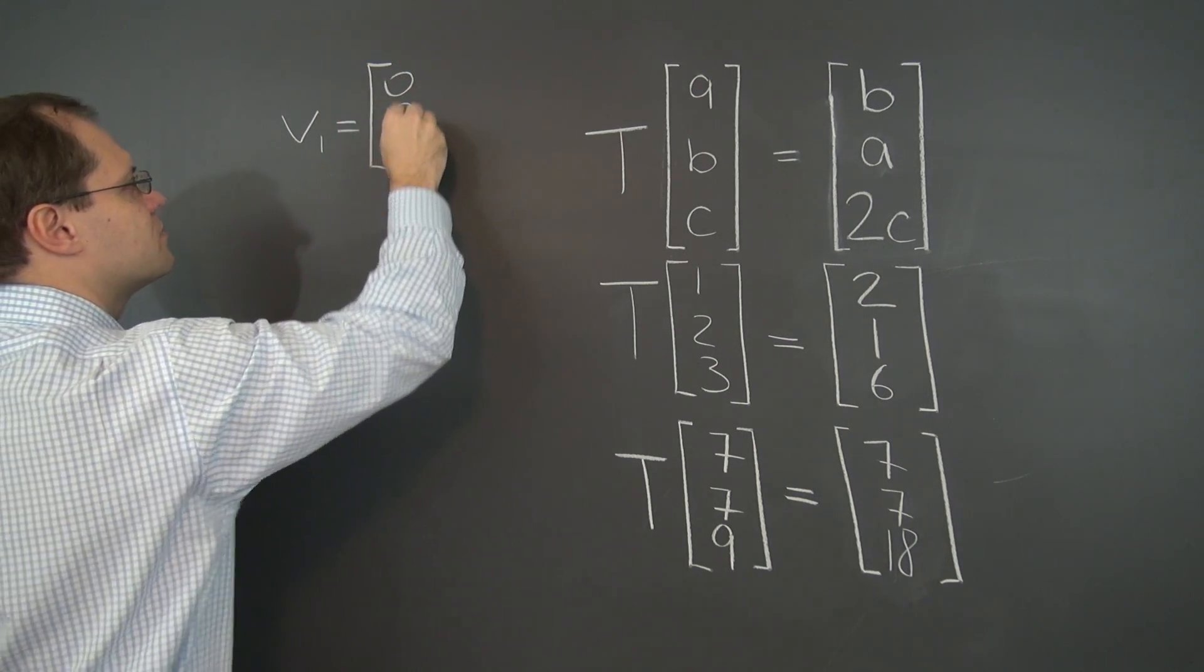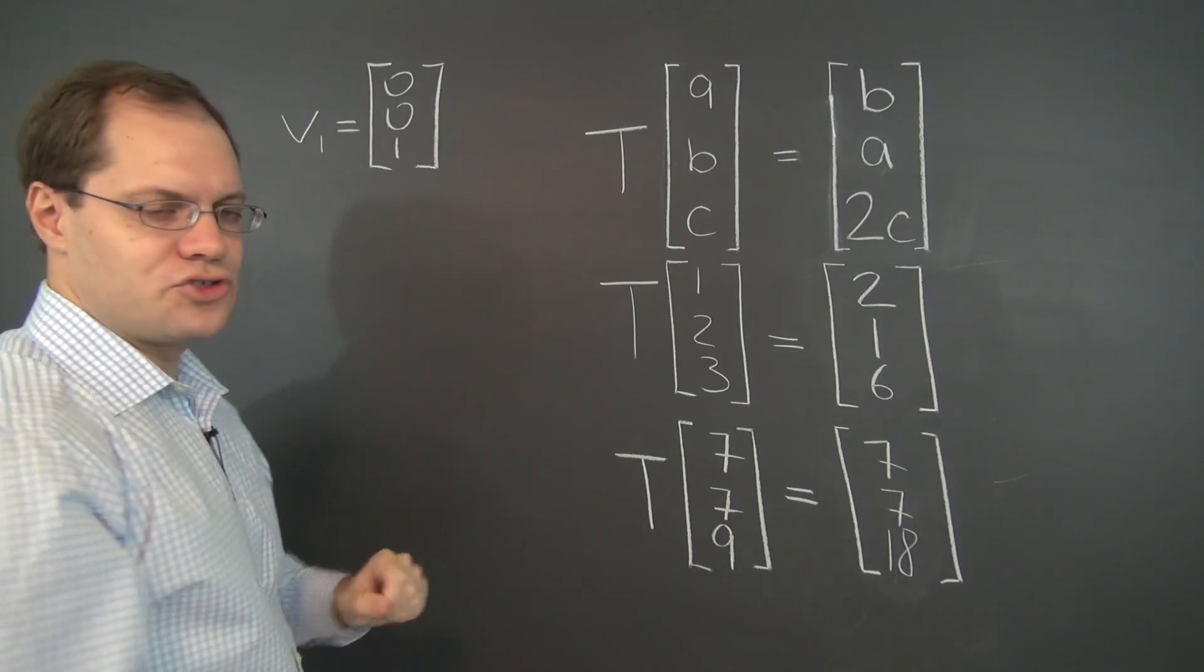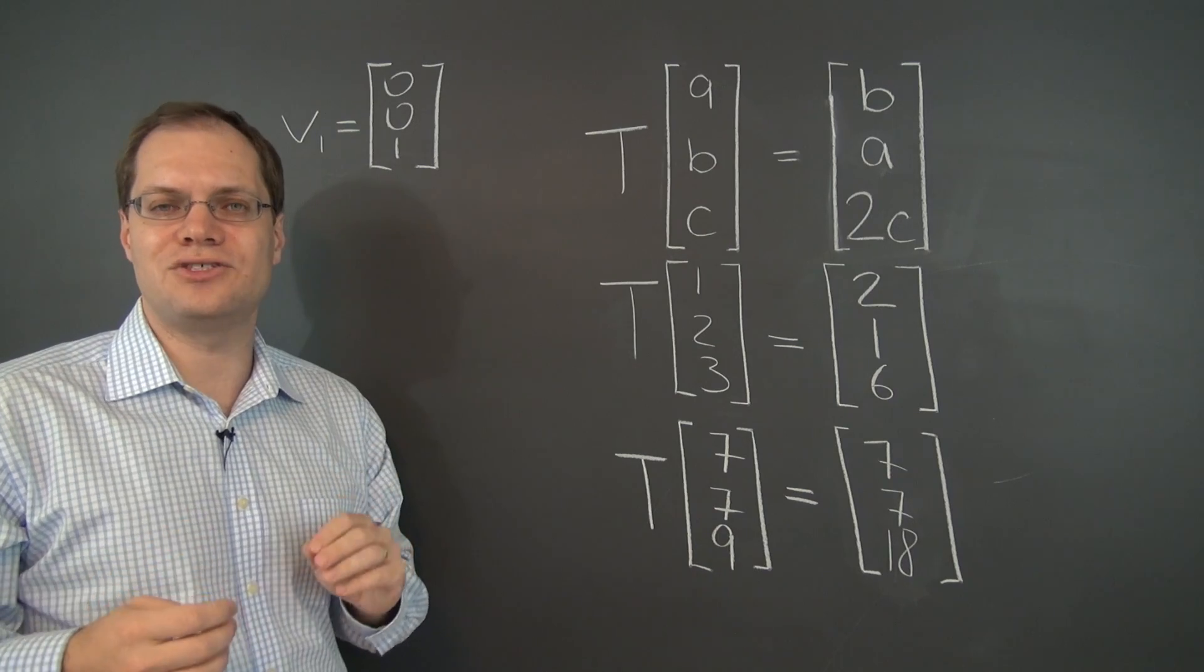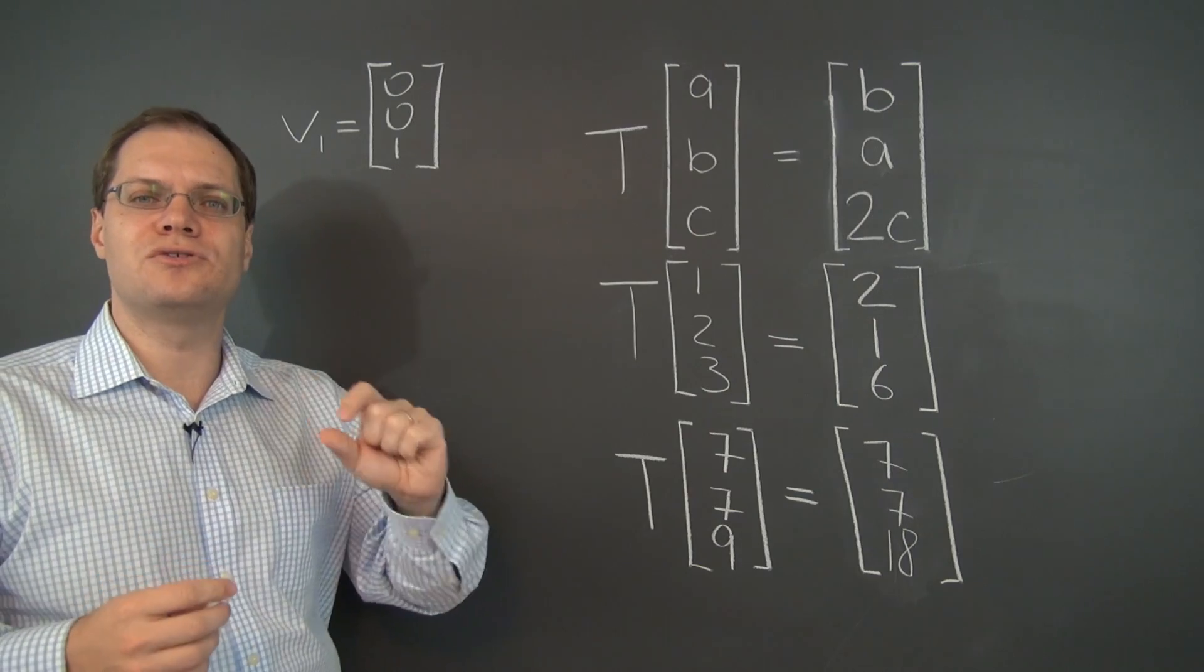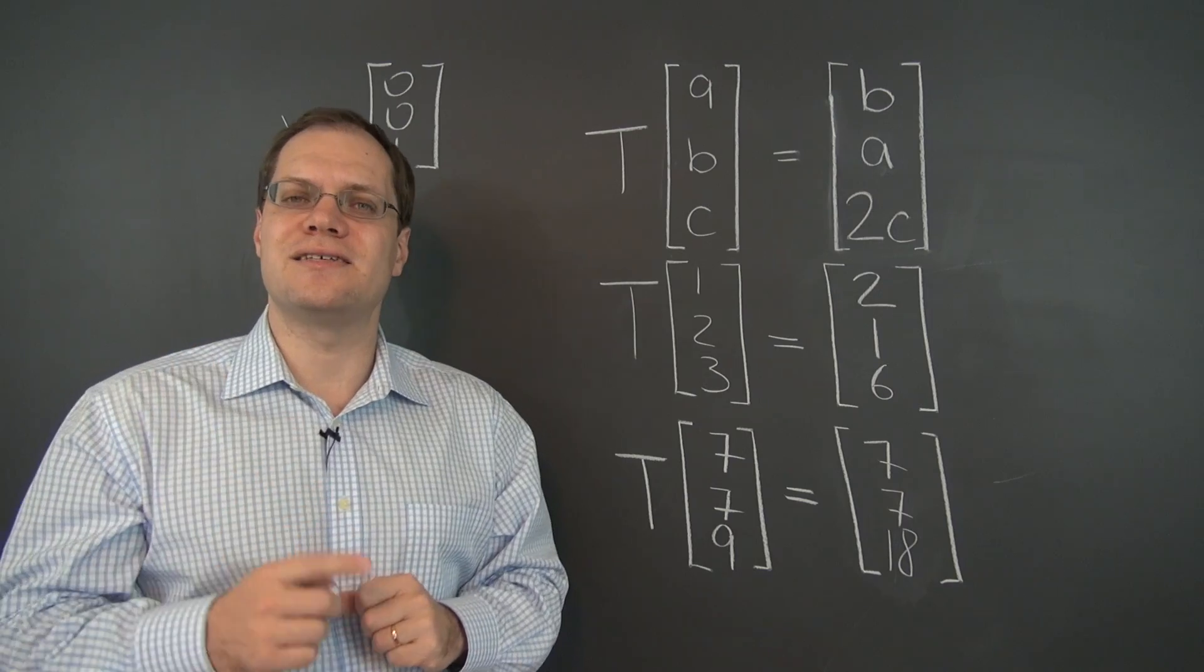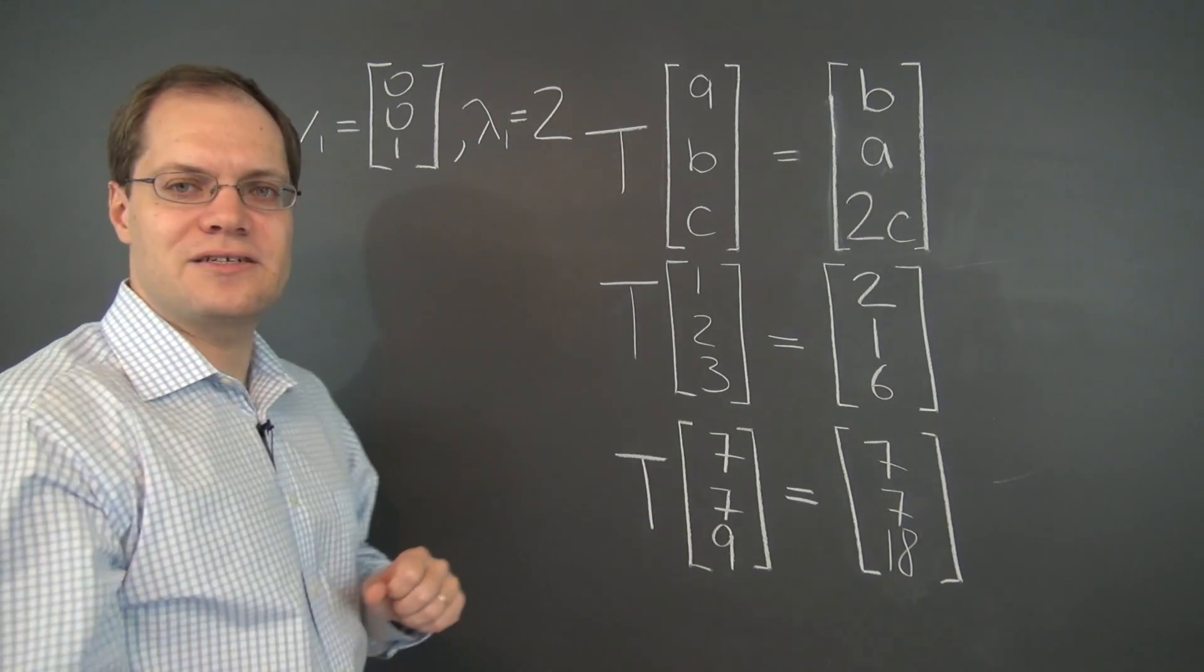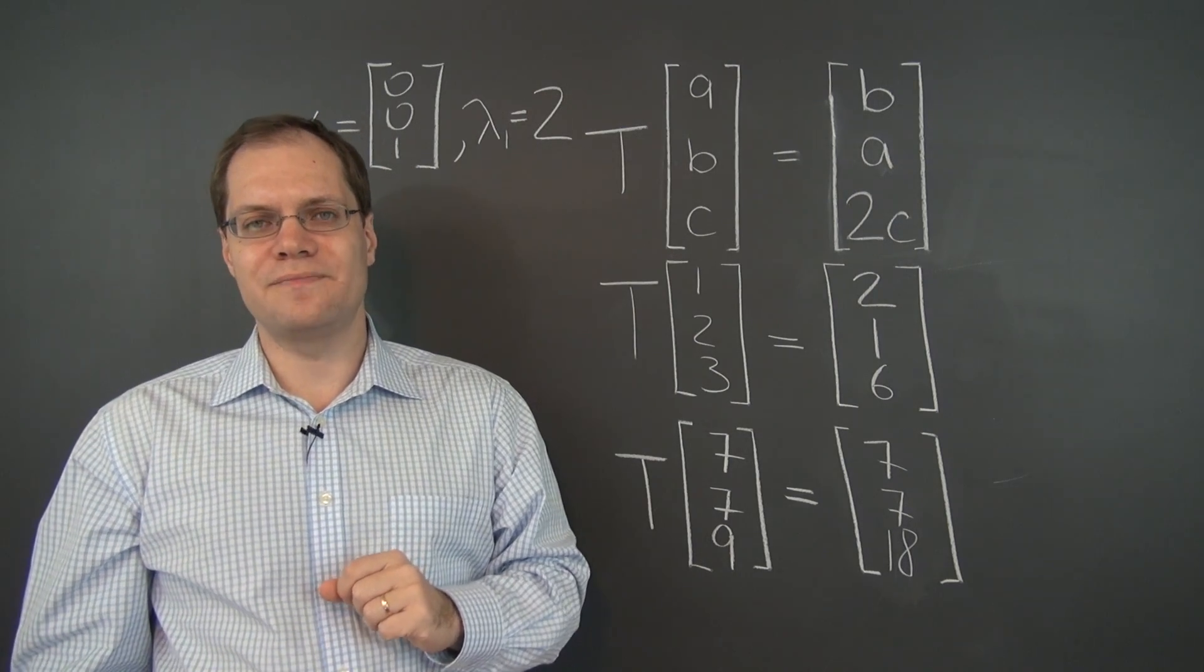Under this transformation 0, 0, 1 becomes 0, 0, 2. And is the result parallel, or does it point along the same line, that's geometric analogy. Algebraically, is it a multiple of the original vector? Is 0, 0, 2 a multiple of 0, 0, 1? The answer is yes, it is. And that multiple is 2. So this is our first eigenvector and 2 is our first corresponding eigenvalue.